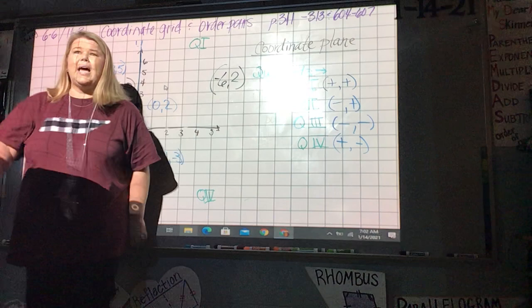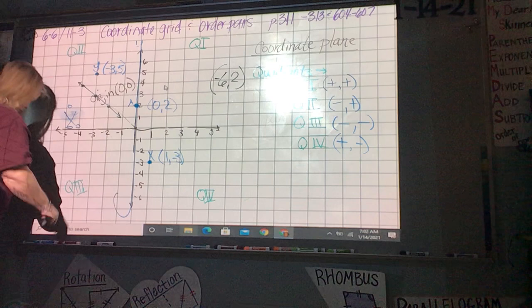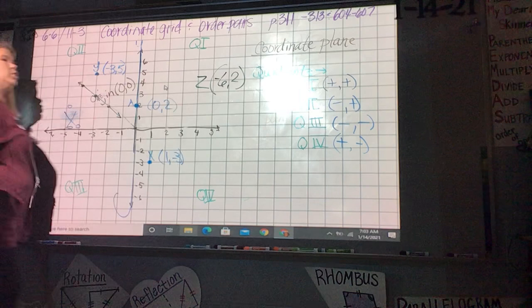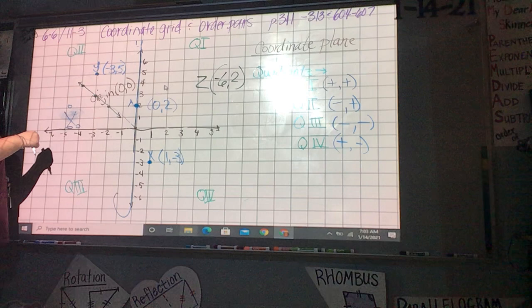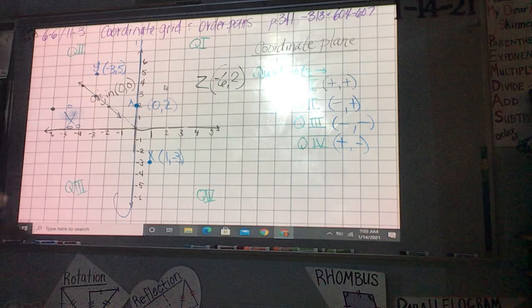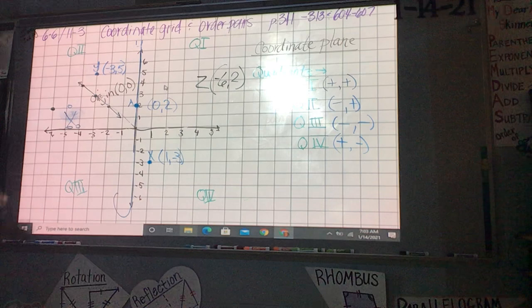If I wanted to plot negative 6, 2. Where's that at? Quadrant 2. So, Z needs to be plotted at negative 6, 2. Do I go down to negative 6? No, you don't. I go over negative 6? Yes. Do I go down to 2? I go up to 2? So, would that be where Z's at? Yes. Questions?